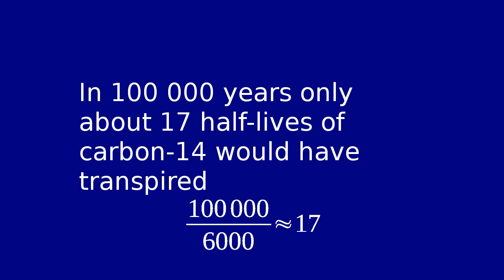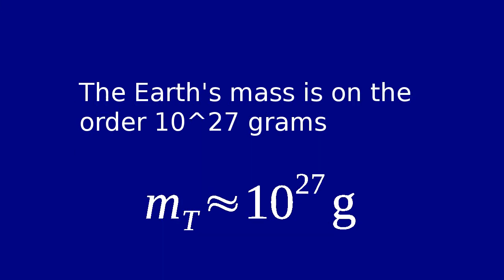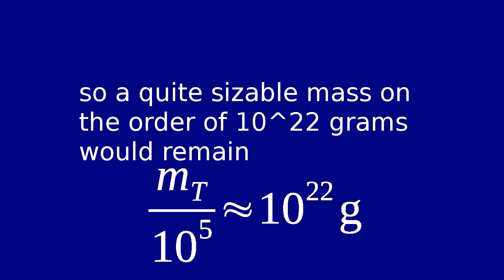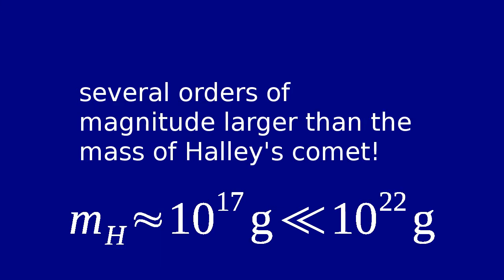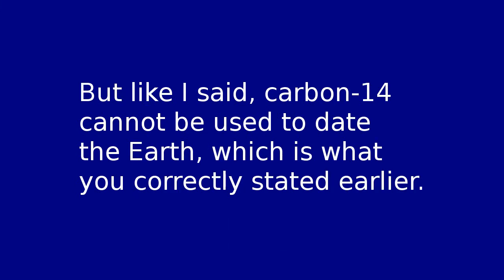'If the entire world were made up of carbon-14, within 100,000 years there would be none left.' No. In 100,000 years, only about 17 half-lives of carbon-14 would have transpired. So the fraction of carbon-14 remaining is on the order of 1 in 10 to the 5th. The Earth's mass is on the order of 10 to the 27th grams, so a quite sizable mass on the order of 10 to the 22nd grams would remain — several orders of magnitude larger than the mass of Halley's Comet. Over the course of Earth's lifetime all of the carbon-14 would have decayed, but carbon-14 cannot be used to date the Earth, which is what you correctly stated earlier.